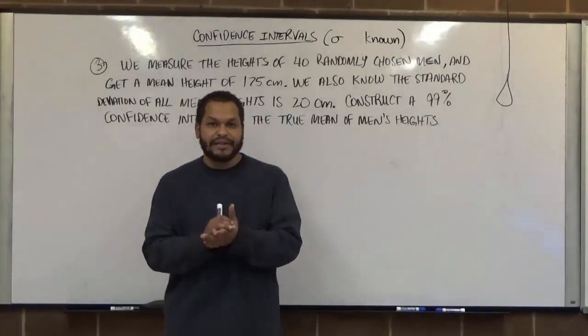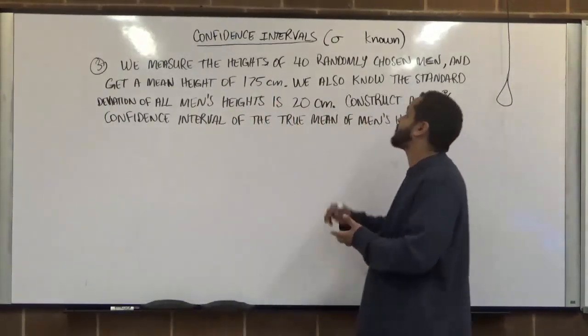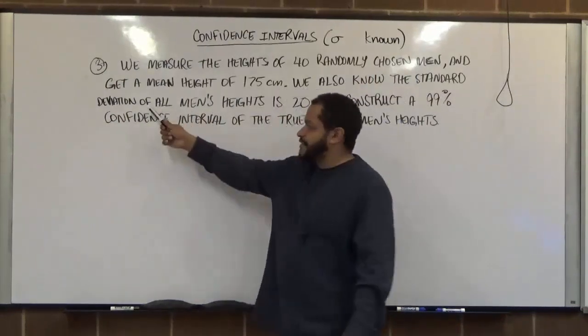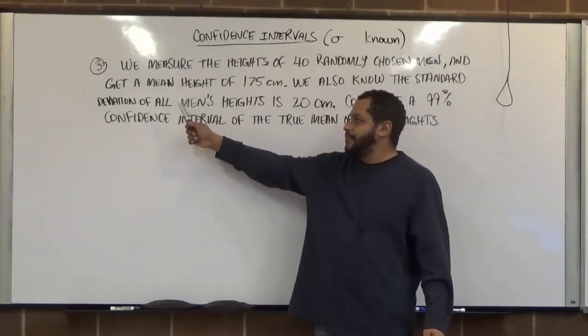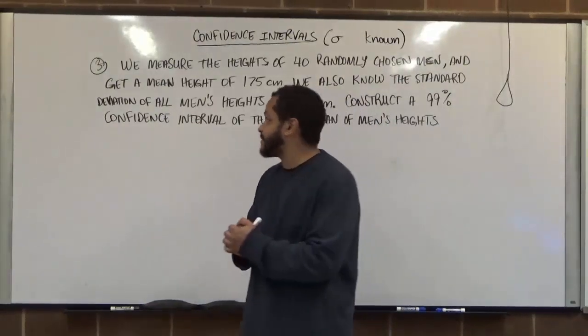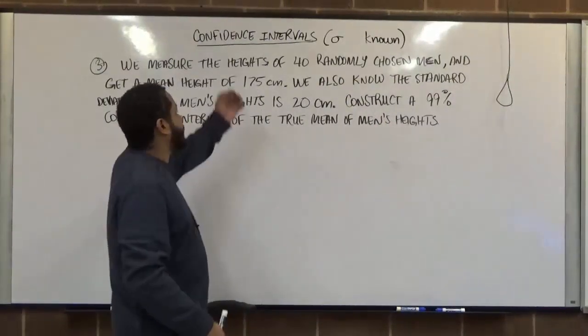Now, in this problem, we see one thing that's really important. We see that sigma is known. We also know this because the standard deviation is coming from the population of all men's heights, meaning we have a population standard deviation. However, we see that we have a sample mean,